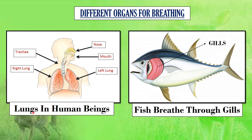The first organ is the lungs. Birds, mammals and reptiles breathe with the help of lungs. All mammals, including human beings, breathe through the nose, where air enters into the body and is then carried to the lungs.